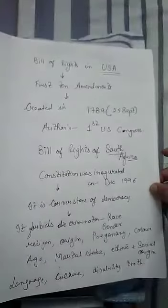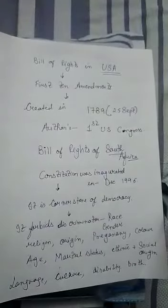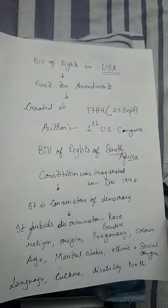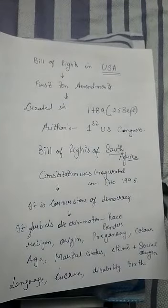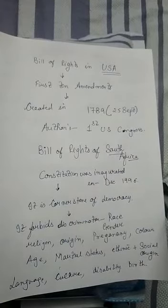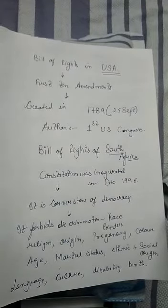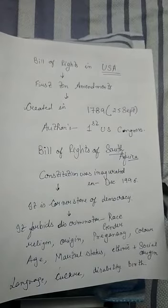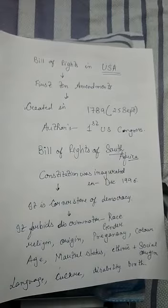Bill of Rights ka sabse pehla jo concept hai, woh USA mein aaya tha. USA mein isse amendments ke roop mein introduce kiya gaya tha. Isko hamne create kiya tha 1789 mein. The same year the French Revolution occurred. The date has been mentioned over here, that is 25th of September.